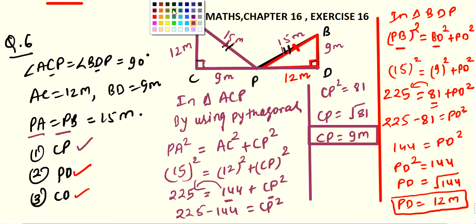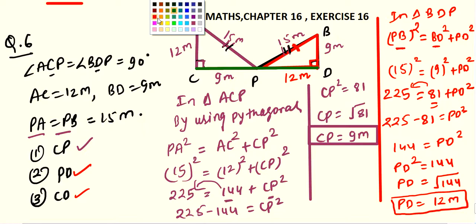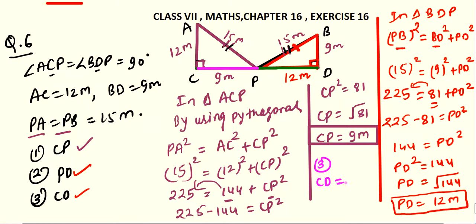From this diagram it is clearly visible how we will get CD. So CD equals CP plus PD. CD equals value of CP 9 plus value of PD 12. Add this, you will get 21 meters, which is your required answer.